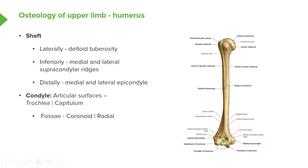Just before these condyles, we have little depressions called the radial fossa and the coronoid fossa. These little depressions allow the radius and ulna bones to sit in them when we fully flex our elbow — they accommodate bony structures on the ulna and the radius.